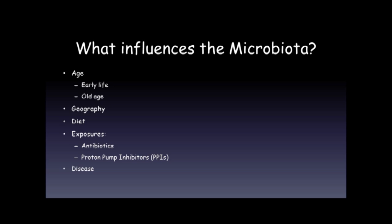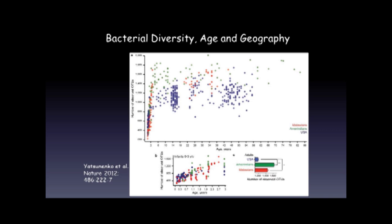This study looked at community individuals in three populations: urban U.S., the Amazon basin in Venezuela, and rural Africa in Malawi. It looked at the number of different bacterial species from age zero up to age 86. For each of the populations, you can see a dramatic rise in the number of different bacteria over the first couple of years of life, and then it remains relatively stable until later in life. And expanding on the first three years of life, you can see the dramatic increase in bacterial species diversity.